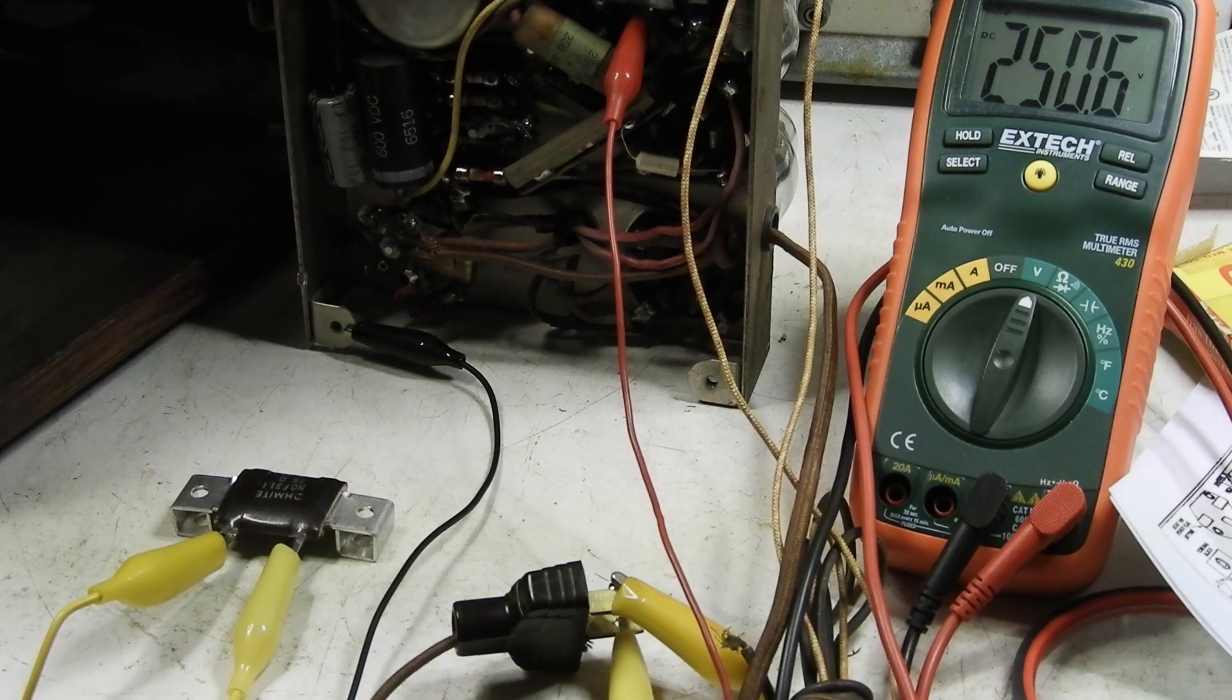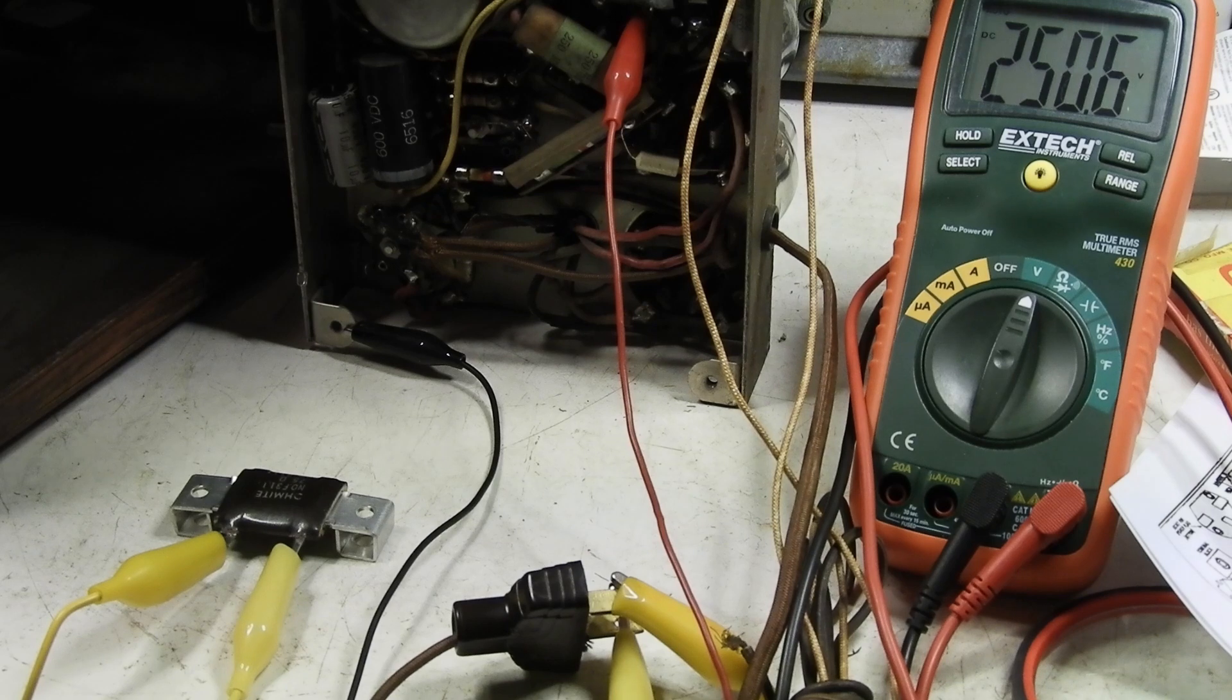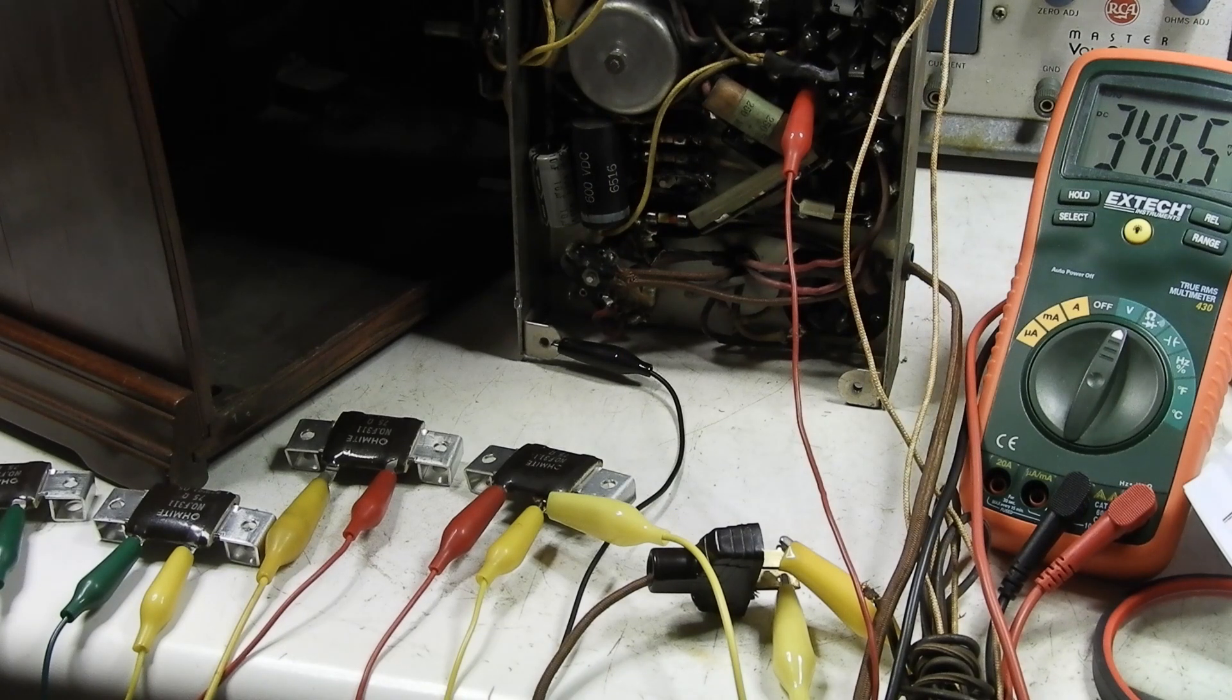And I don't want to give something like that to a customer. So we'll try and come up with something where the heat will be less. And this is 75 ohms at 30 watts. Here you can see that I've got four of those 75 ohm 30 watt resistors.